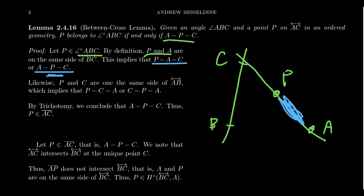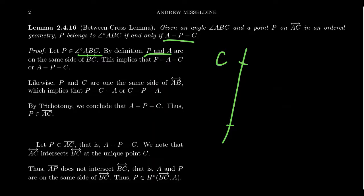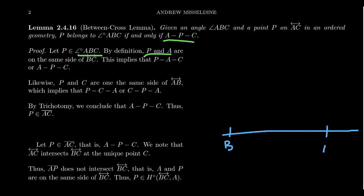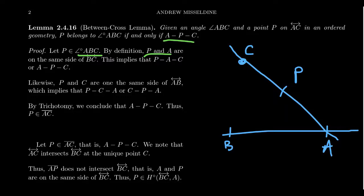The second option is the one drawn on screen, but considering A and P on the same side, by trichotomy there's a third option: C is between A and P. But if that were the case, that would imply that P and A are on different sides of line BC, so that can't happen. So by trichotomy, we have two options: A is between P and C, or P is between A and C.